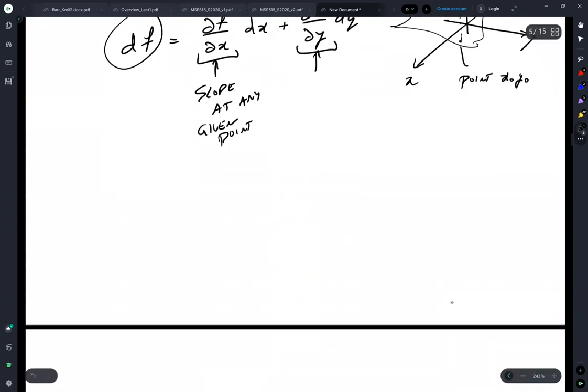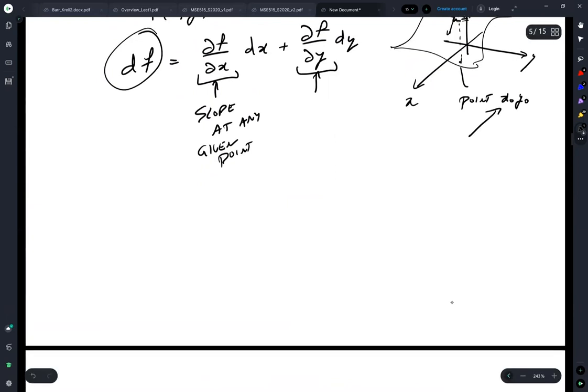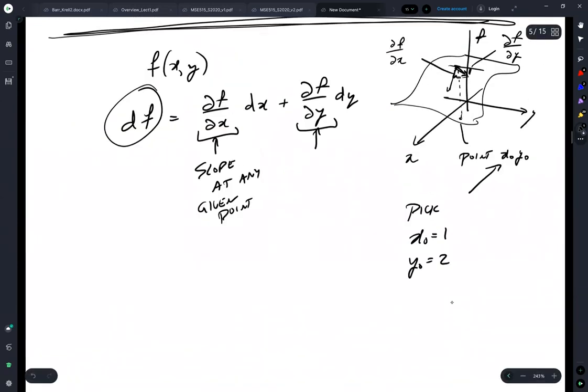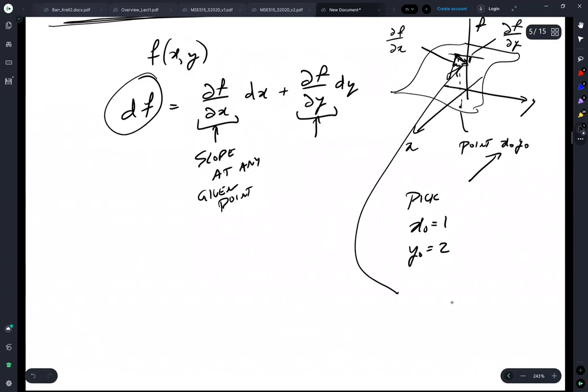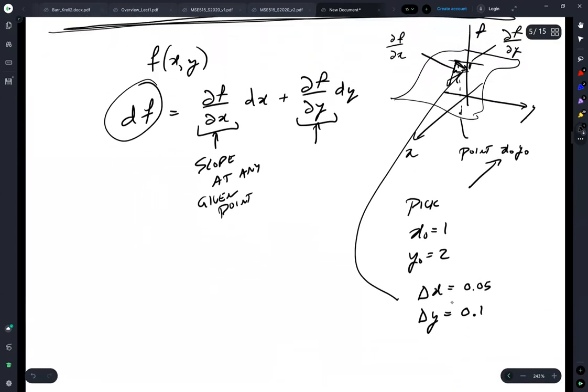And to show you, let's imagine we're at point where my notes here saying x is 1 and y is 2. And let's say we're moving by delta x is 0.05 and delta y is 0.10, some distance.